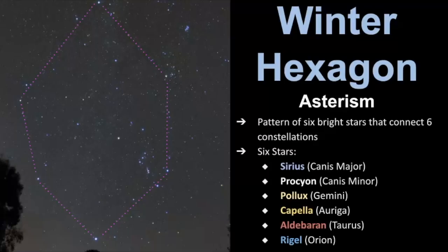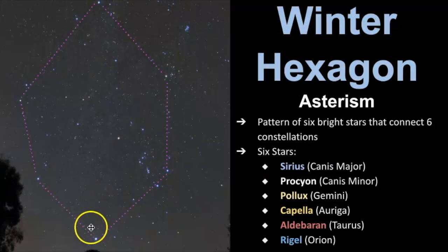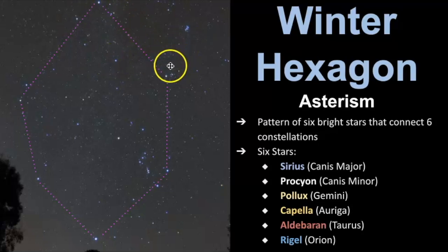The winter hexagon is very similar but just a bigger star pattern. It connects six bright stars instead of three, and those stars include Sirius, Procyon, Pollux in Gemini, Capella in Auriga, and Aldebaran in Taurus.